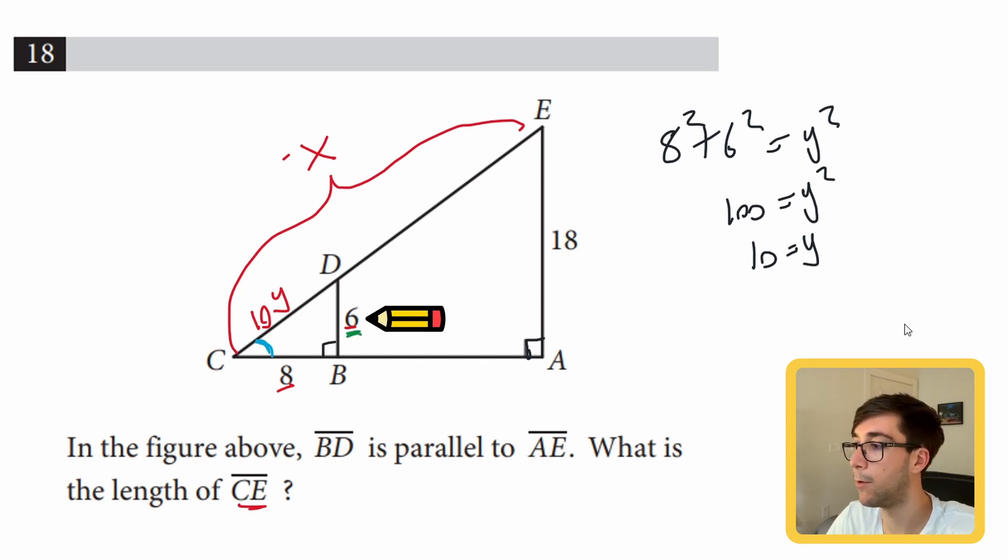That's going to equal the same ratio for the red sides, which is the hypotenuse. We know the small hypotenuse is 10 and the big one is x. Now we can just solve this equation to find x.